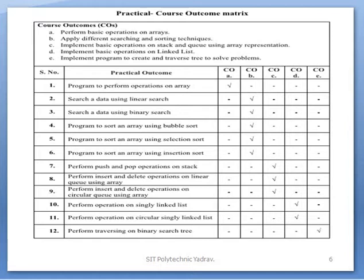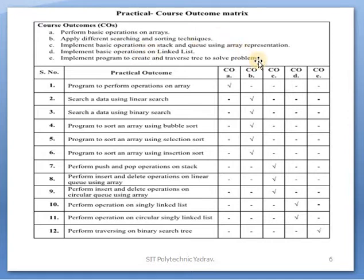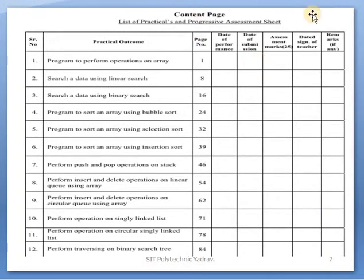Here are the practical course outcomes. In today's practical we learn practical number 6: a program to sort an array using insertion sort. This maps with second CO — apply different searching and sorting techniques. The content page lists 12 practicals, and today's session covers practical number 6.